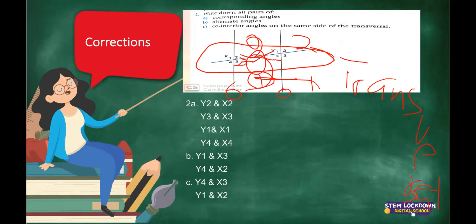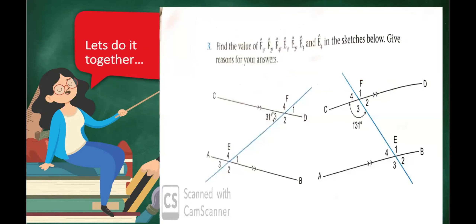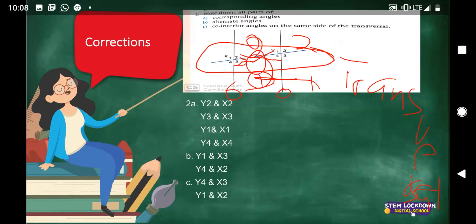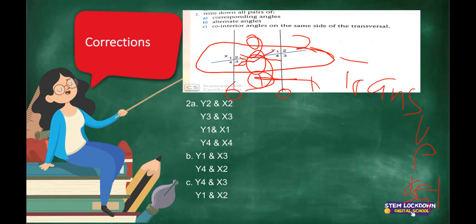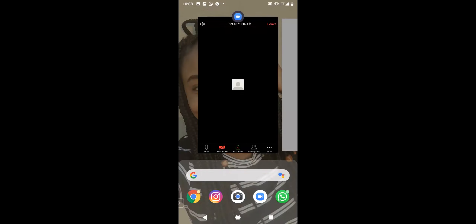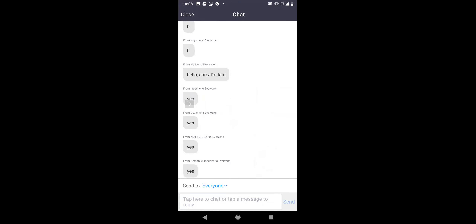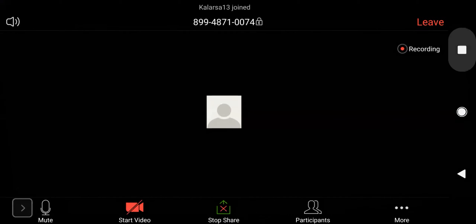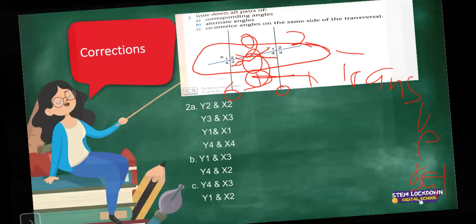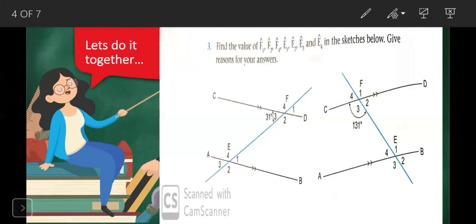Interior means inside — you can think of something that is inside. Exterior means outside. So for co-interior angles, we are only focusing on the interior, which is the inside between our two parallel lines. Our pairs are Y1 and X2, and Y4 and X3. Please comment 'yes' if you got it right or understand the difference between corresponding, alternate, and co-interior angles.